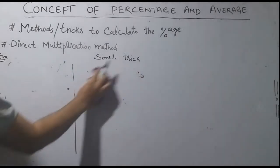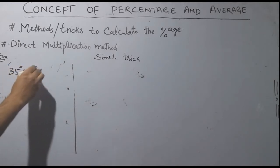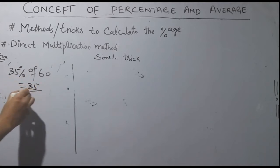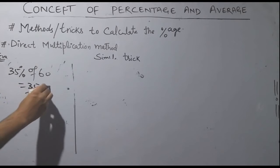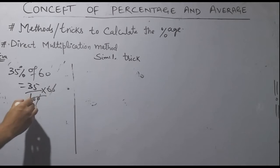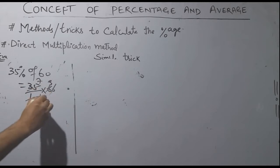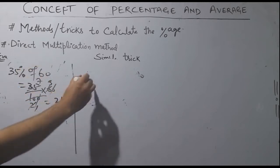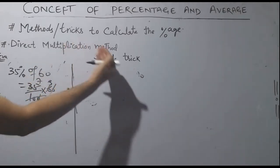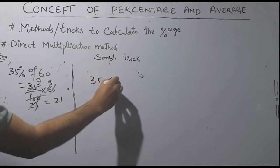What about when it is not a simple multiple of 10? For example, 35% of 60. You can use the traditional method: 35 divided by 100 into 60. Cancel the common zero: 35 × 6 divided by 10. That gives 210 divided by 10, which equals 21. So 35% of 60 is 21.